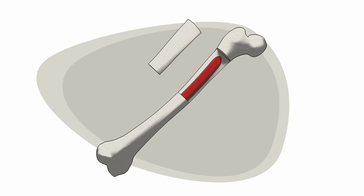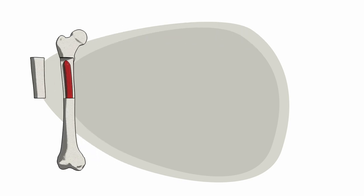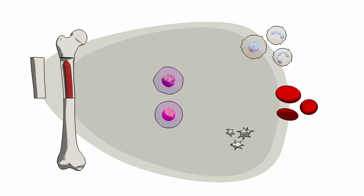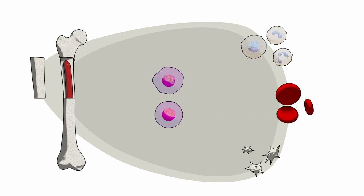Bone marrow is the soft inner part of the bone where stem cells and three main types of blood cells are formed: white blood cells, red blood cells, and platelets.